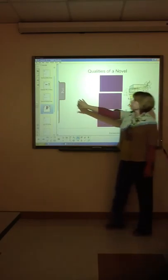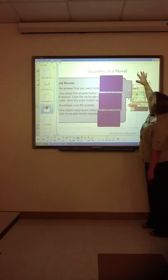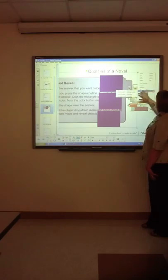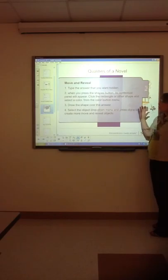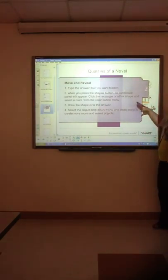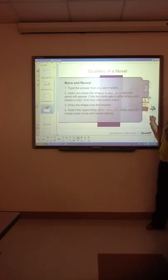Let's review those steps again. You type the answers that you want hidden. When you press the shape button, its contextual panel will appear. Select a rectangle or another shape, and then select a color from the color button menu. Draw the shape over the answer by pressing and dragging. Select the object drop down menu, and press clone to create more move and reveal objects for all of the answers you have created.